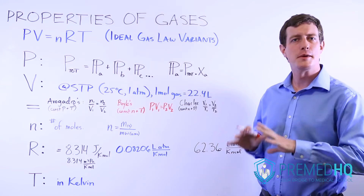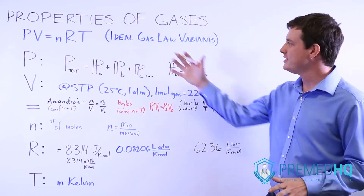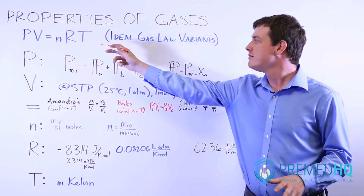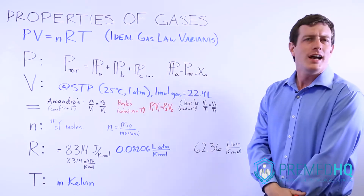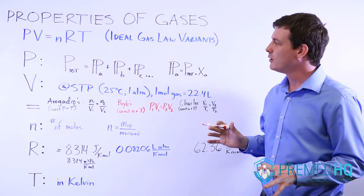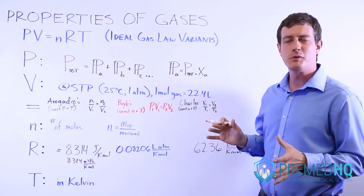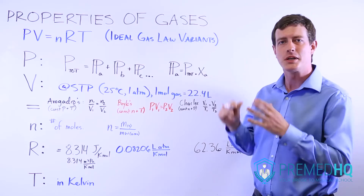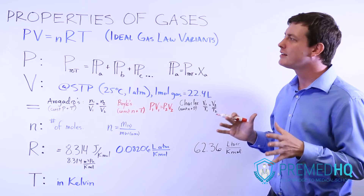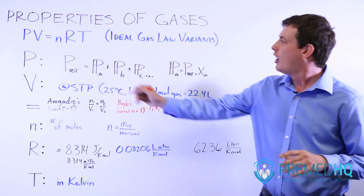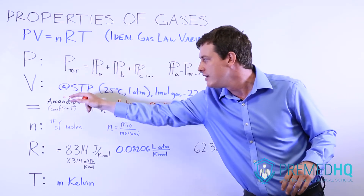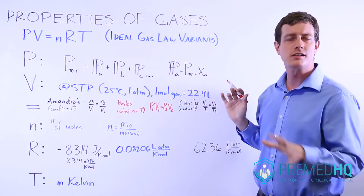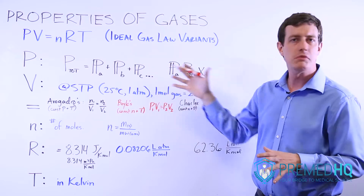In this video, we'll go over the many variations of the ideal gas law, which you should have ingrained in your memory as PV equals NRT. I thought about organizing it as an ABCD — Avogadro's, Boyle's, Charles's, and Dalton's — but I think it's better to go through all of the components of PV equals NRT individually, and explain the nuances of all of these by going through them one by one.